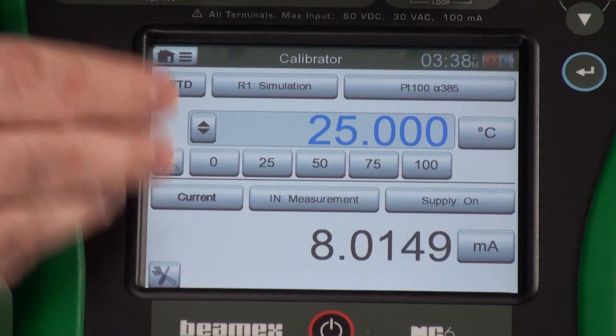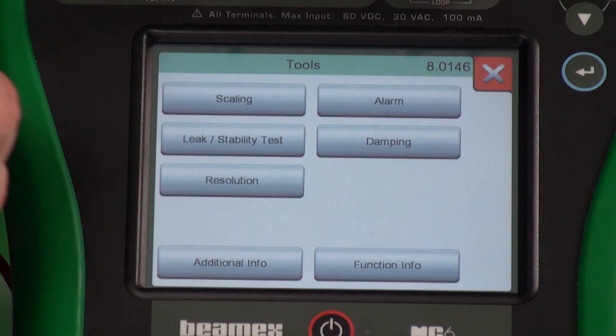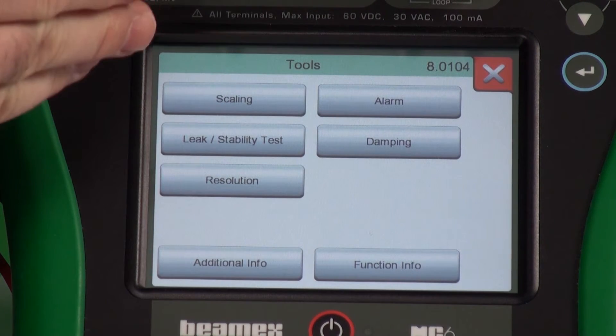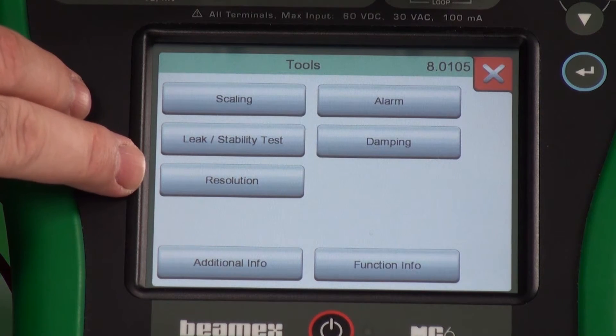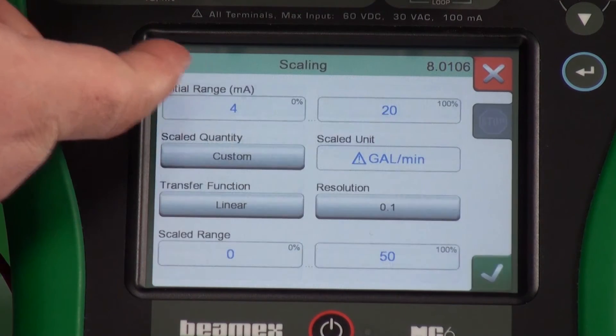There are tools on the output as well. So the same button but in the lower part of the screen. We have scaling, alarm, damping, leak, stability test, resolution changes. Let's go to scaling.